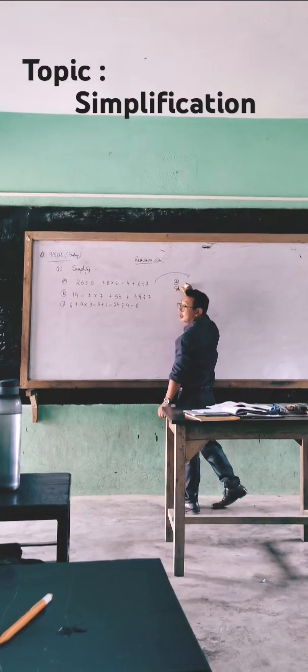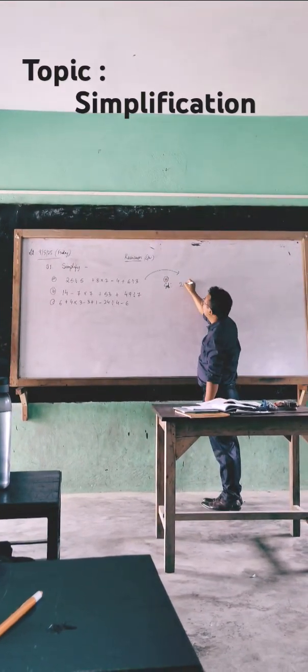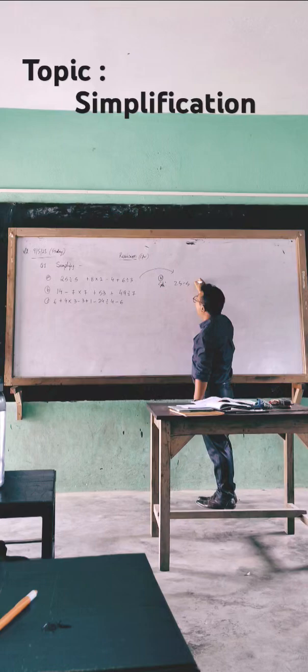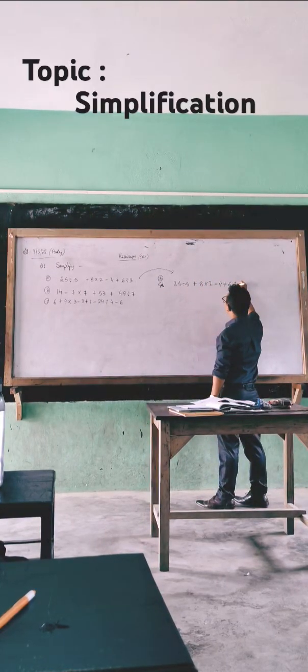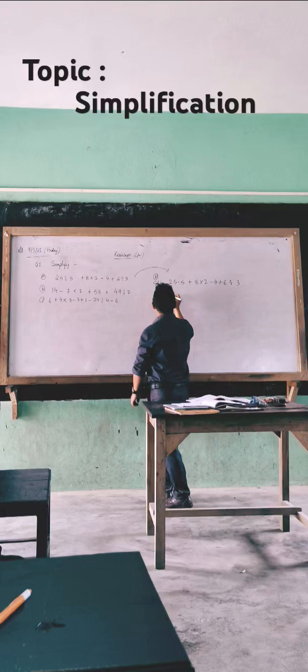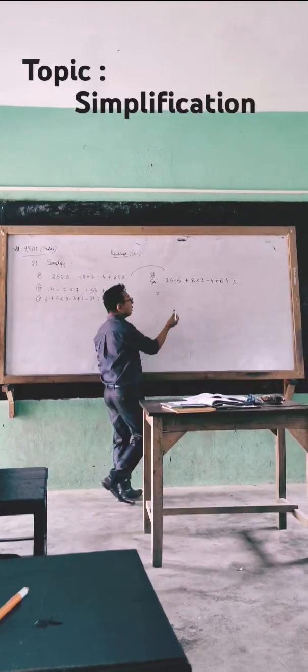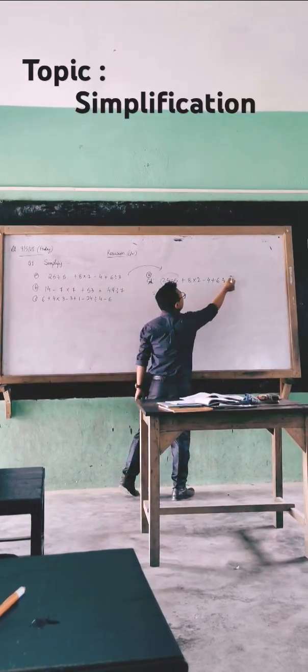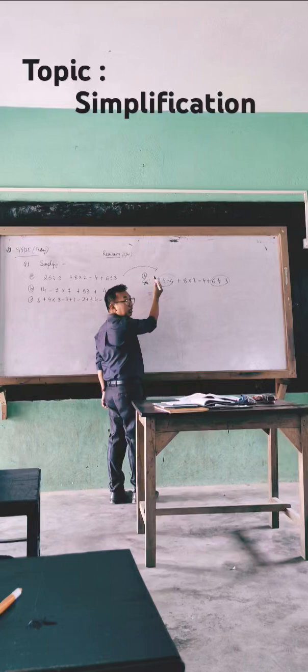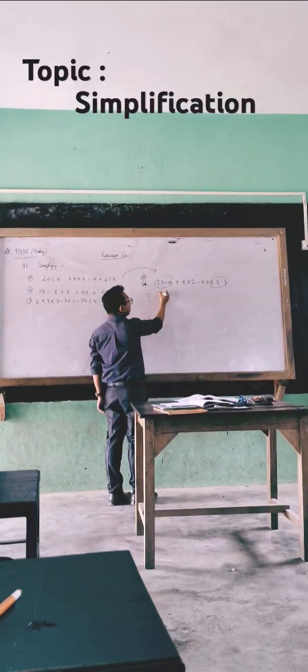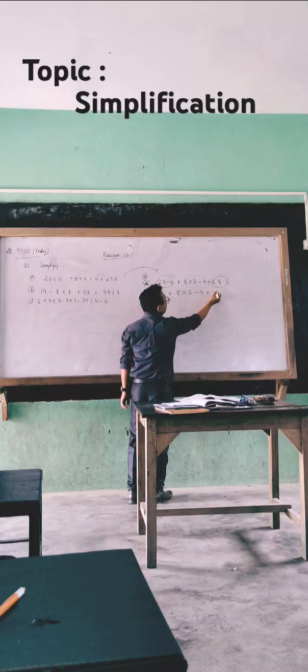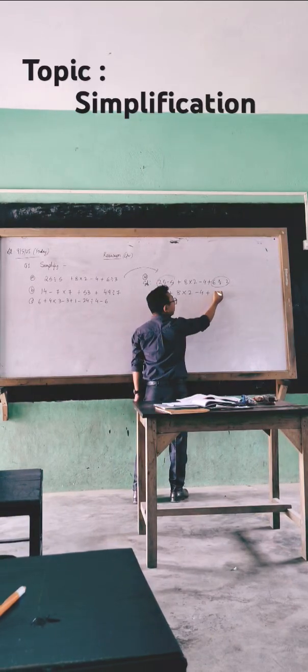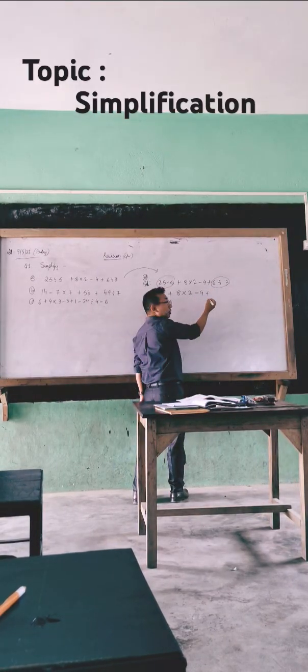Okay, solution. Move here, 5 to 5, 5 to 5. 8, 8 is equal to 2, minus 4, plus 2, 2, 2, 2.